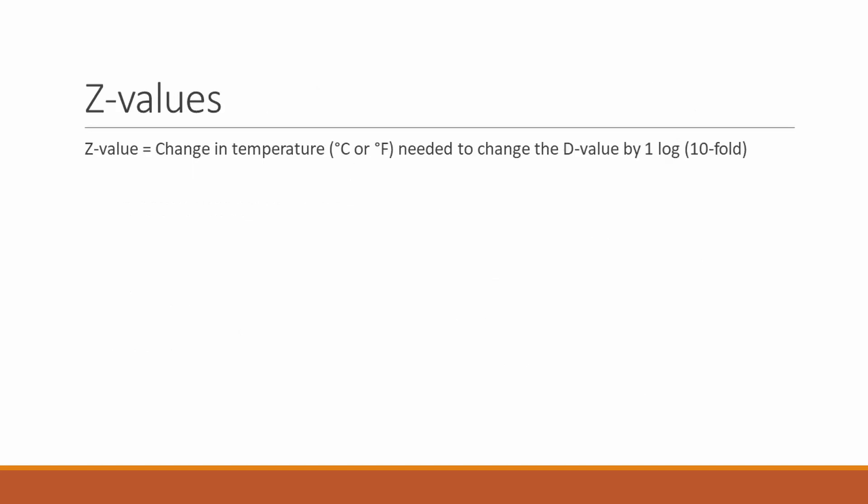Now let's look at Z values. Z values refer to the change in temperature in degrees Celsius or Fahrenheit needed to change the D value by tenfold. Often they are determined experimentally.